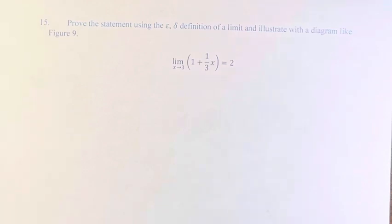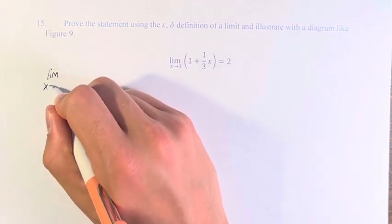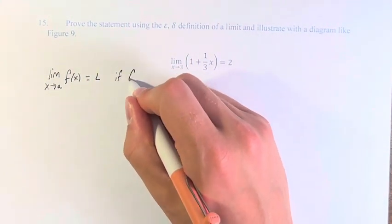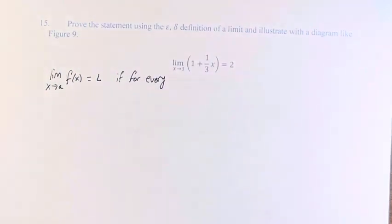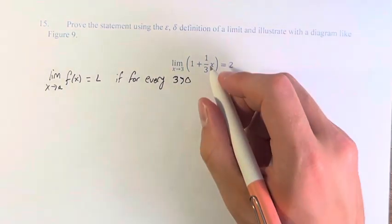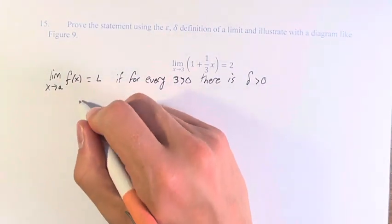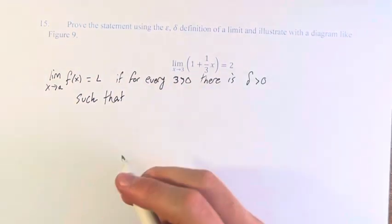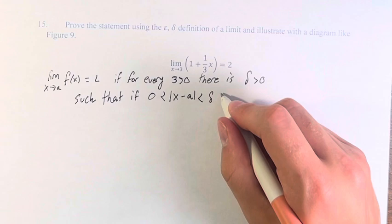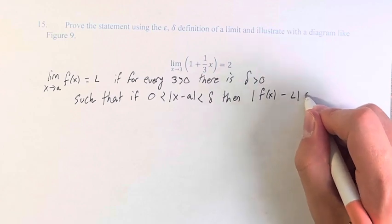The formal definition of a limit states that the limit as x approaches a of f(x) equals L if, for every positive number epsilon greater than 0, there is a number delta greater than 0 accompanying that epsilon, such that if 0 is less than the absolute value of x minus a is less than delta, then the absolute value of f(x) minus L is less than epsilon.